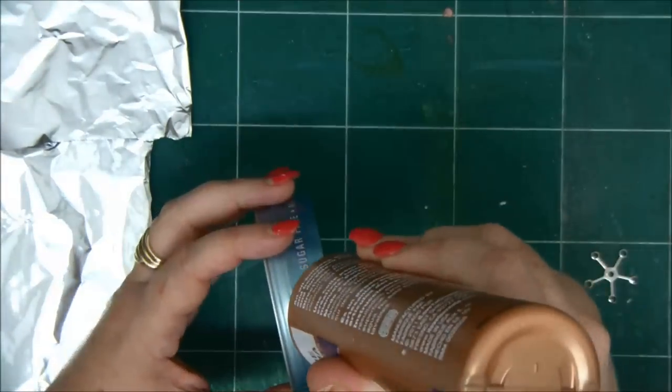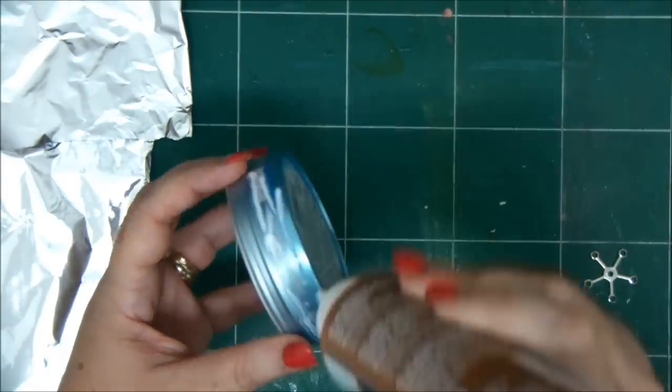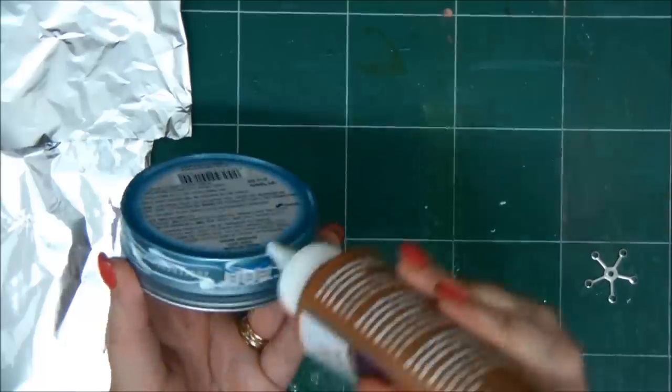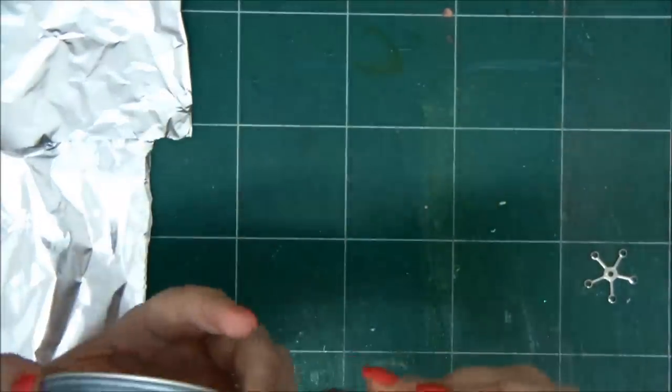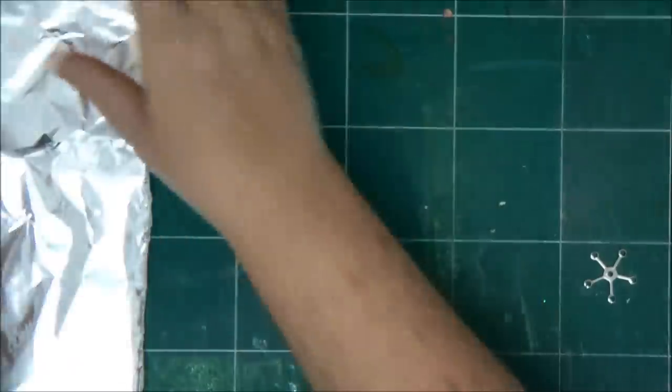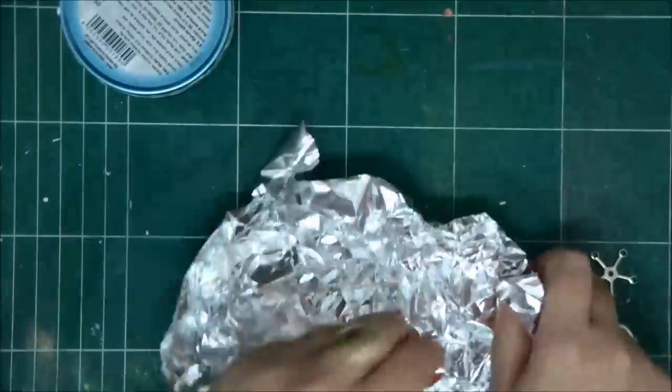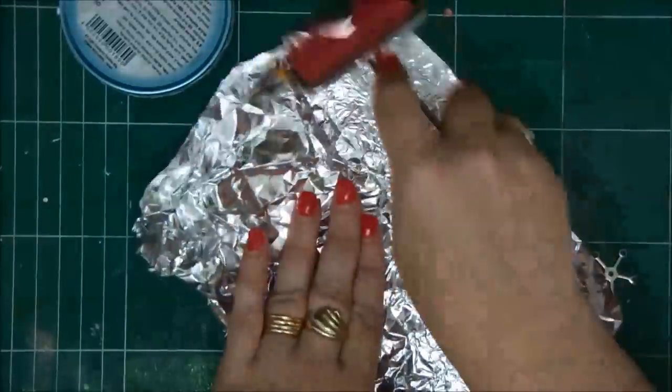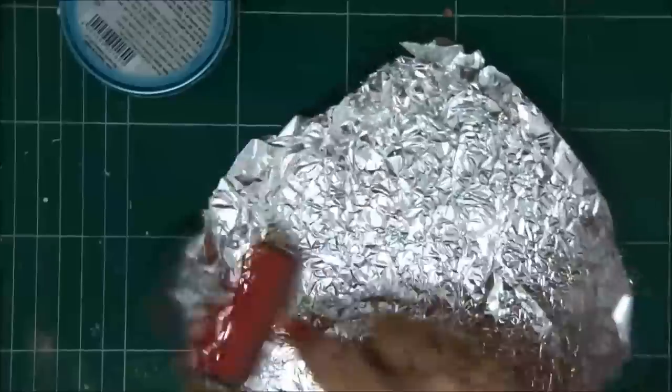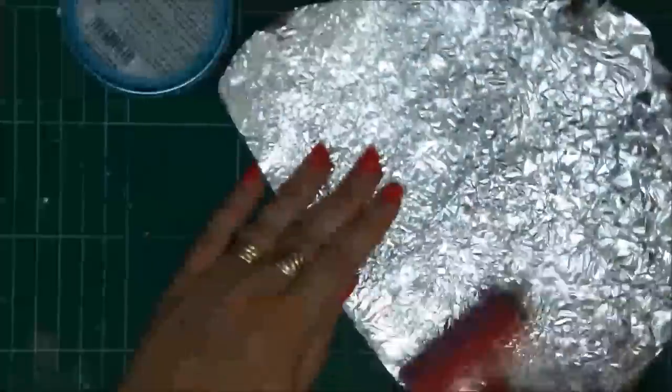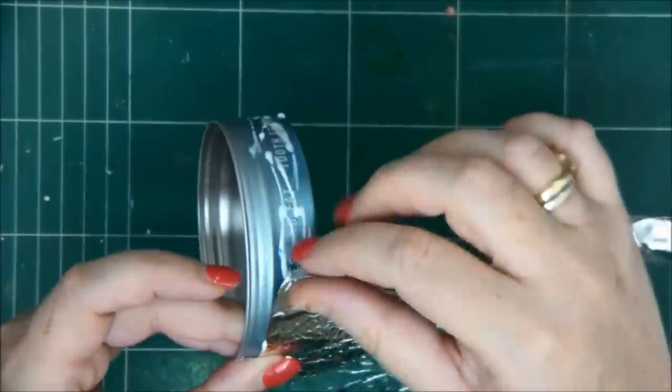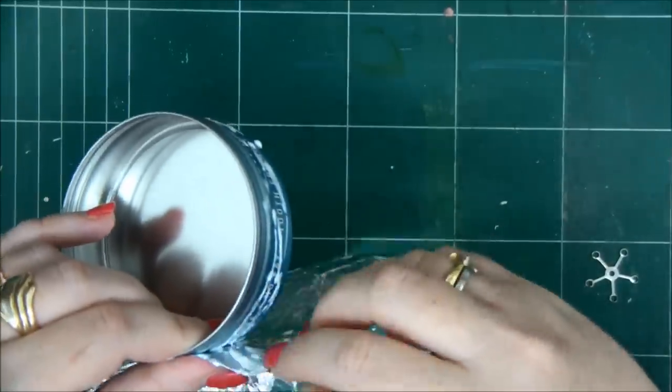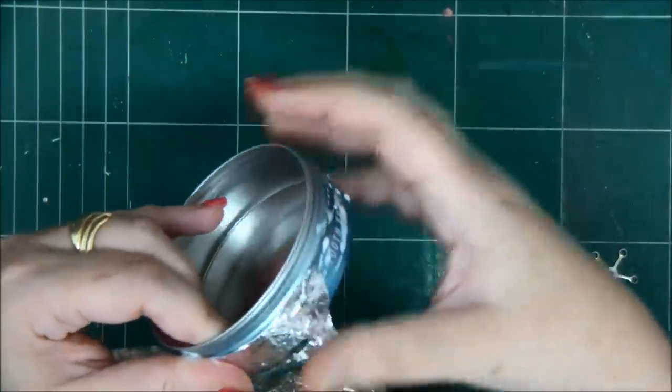Now for the box itself, I'm only going to glue the aluminum foil not over the part where the lid is going to close because it's going to be a problem to close it with the aluminum foil. So I'm leaving that without anything, just like this, so I'll have no problem closing it later.